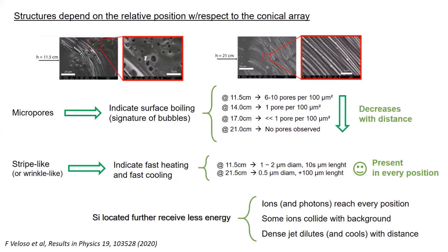On the other hand, the stripe-like formations indicate fast heating being followed by a fast cooling of the surface. In this case, the fast heating is produced by the outflows, and the fast cooling is produced by the energy transfer to the bulk of the silicon which acts as thermal reservoir for the surface.